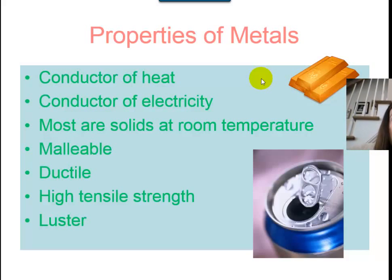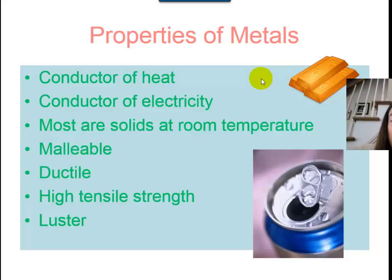Most metals are solids at room temperature. One exception is mercury, which is a liquid at room temperature. Metals are malleable, meaning you can flatten them into sheets, kind of like aluminum foil. Metals are also ductile — you can stretch and shape them into wires. Metals have high tensile strength, meaning it takes a lot of effort to break or tear them. And finally, metals have luster, or shine.